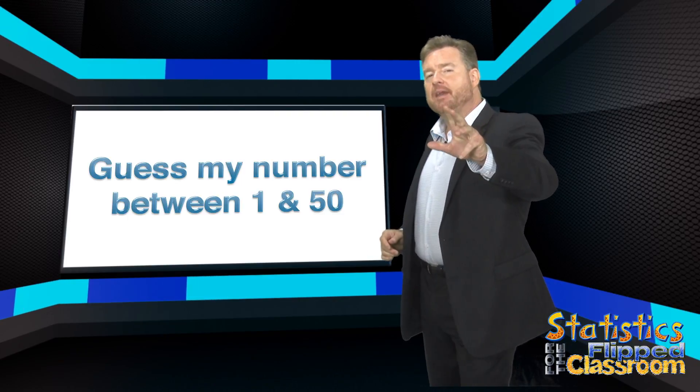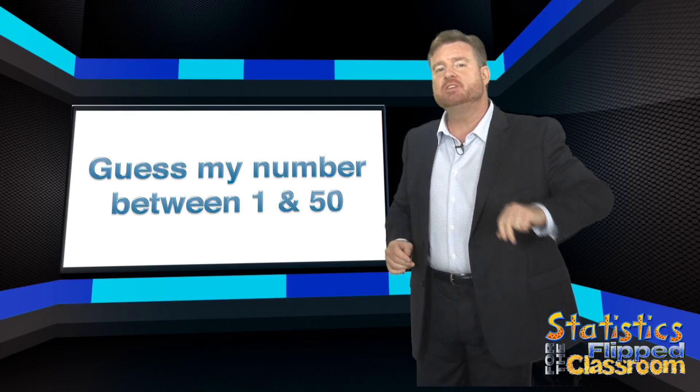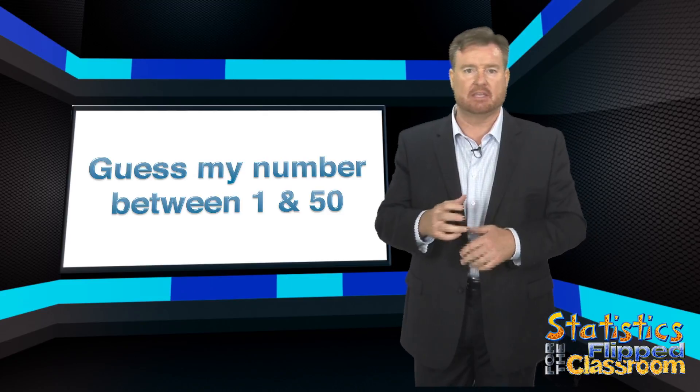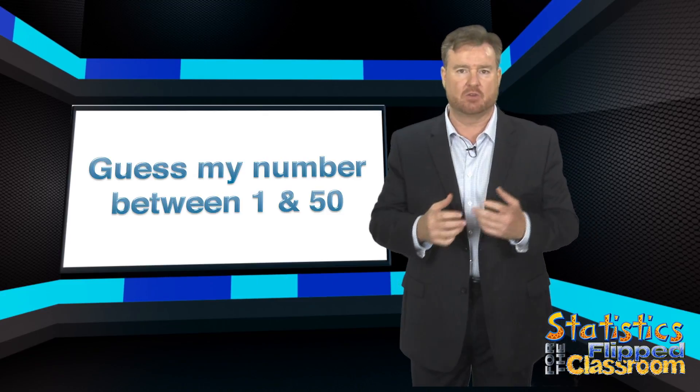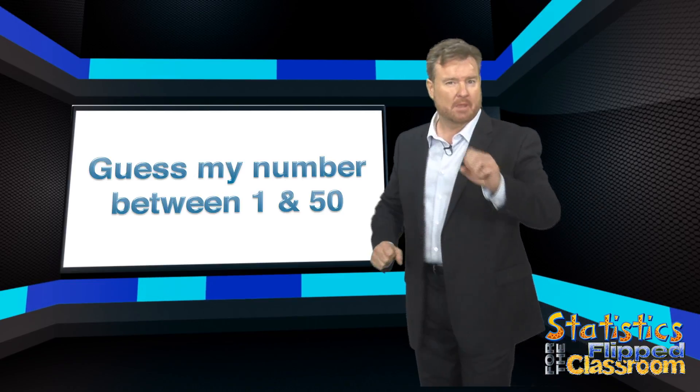Okay, the number that I'm thinking of between 1 and 50. Both of the digits are odd but they're not the same. So for instance, it could be 17 but it couldn't be 11. Have you chosen a number? Please do so.